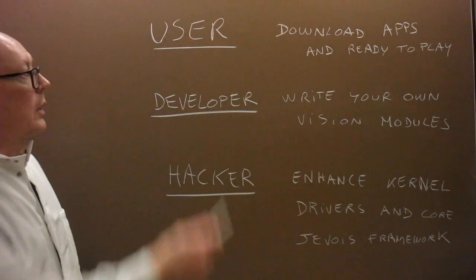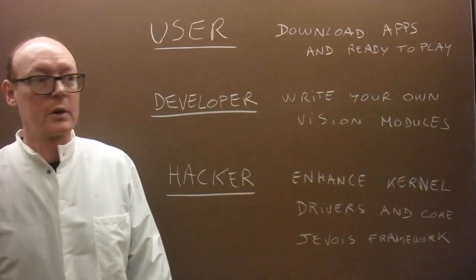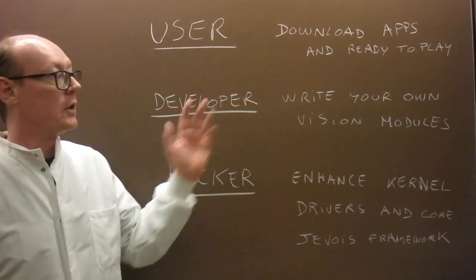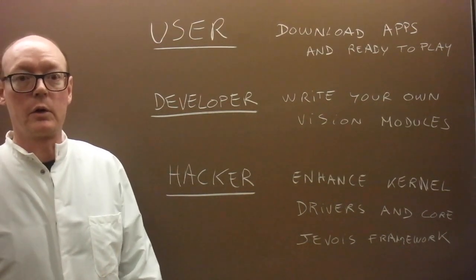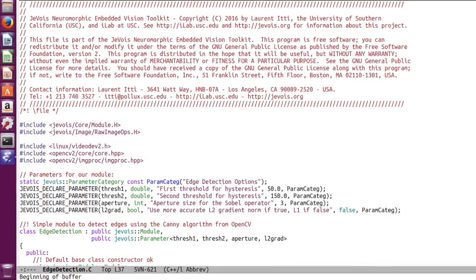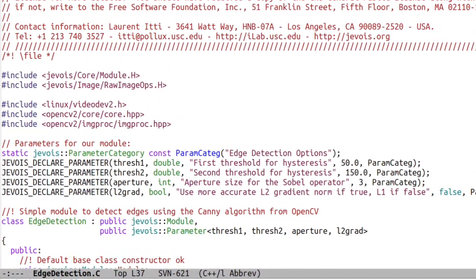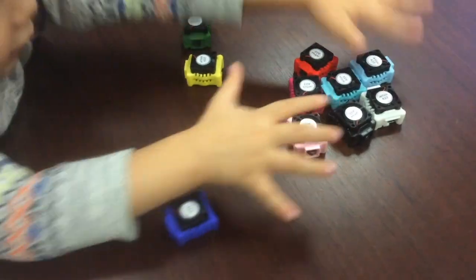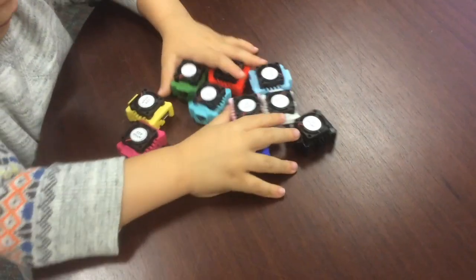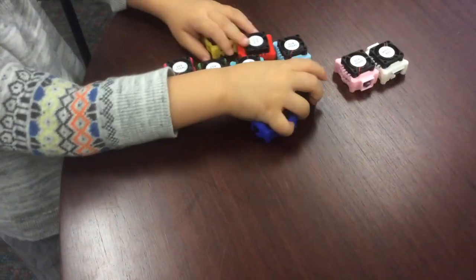We have three basic usage scenarios. As a user, you can download apps and you are ready to play. As a developer, you can write your own modules. As a hacker, you can enhance the kernel drivers and also the JeVois framework. We make it easy for you to write your own vision modules by handling all the details of the camera and USB. Here, in about 20 lines of code, we implement a real-time edge detection algorithm. We believe this has huge potential, especially for kids to start experimenting with machine vision in all of their projects. If you like what you just saw, please consider backing us, and thanks for watching.